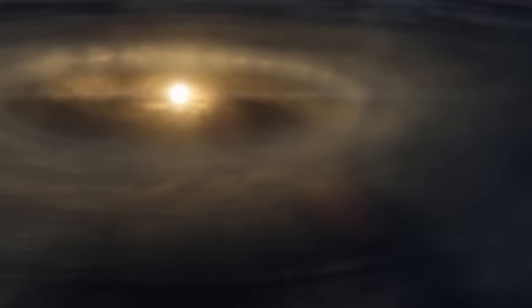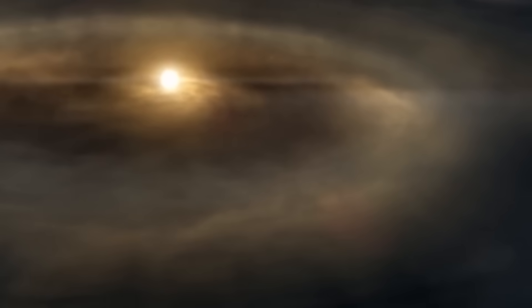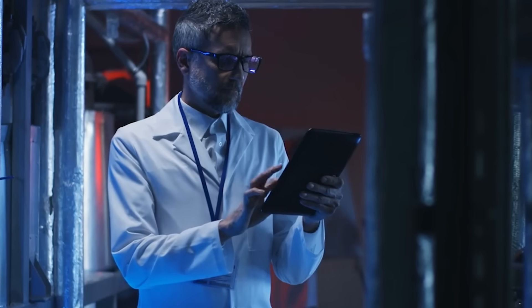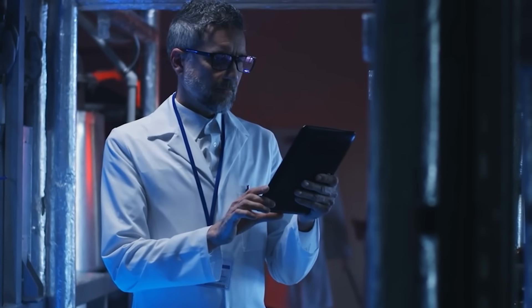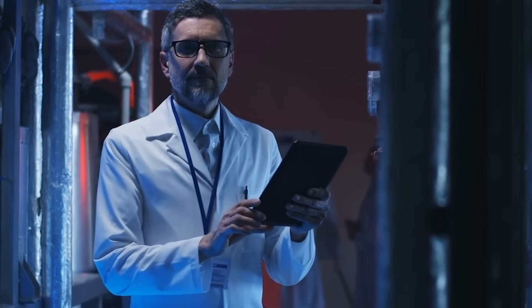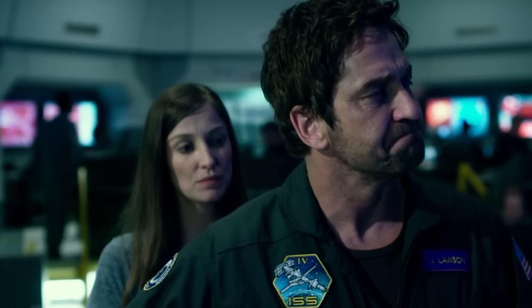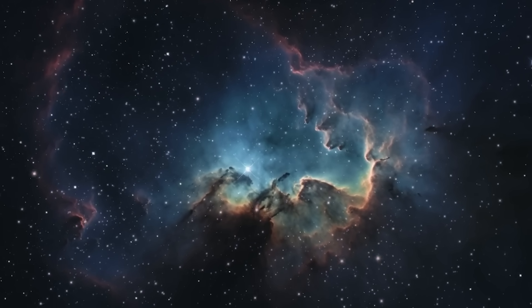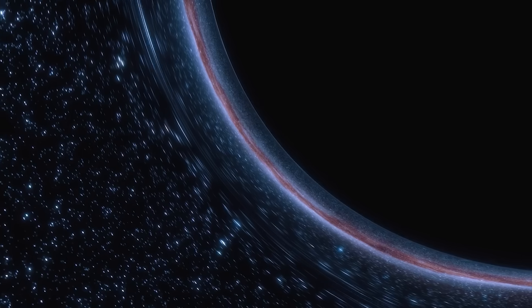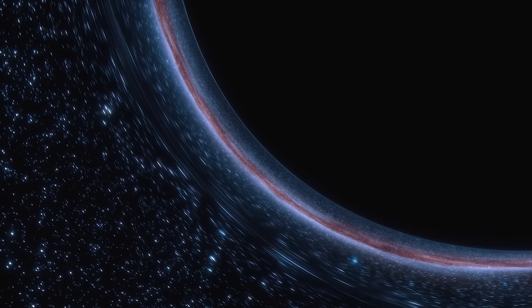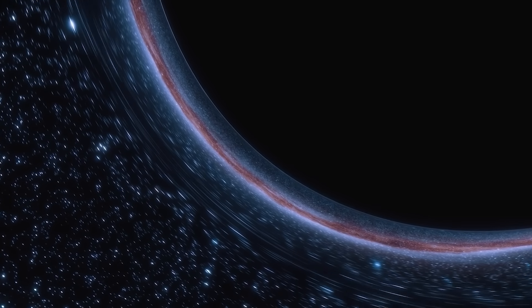The central supermassive black hole exhibited irregular fluctuations, almost pulsing as if breathing. Over weeks, Webb took frame after frame documenting these pulses, which followed no known pattern and were not attributed to accretion disk variability. Instead, scientists noticed a strange symmetry, mirror-like reflections of radiation bursts that repeated in concentric rings. The suggestion arose that perhaps this black hole was interacting with dimensions beyond our own, a gateway or echo of realities long theorized in string theory but never before observed.